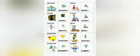Look at this picture. Here the words already have 'e' at the end, so we add only 'd'. The examples are: escape → escaped, bake → baked, close → closed, cycle → cycled, dance → danced.